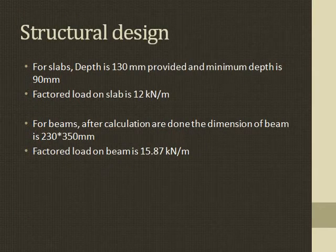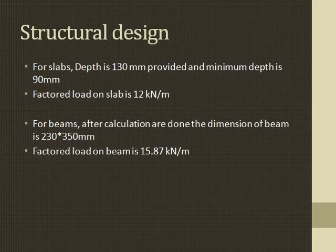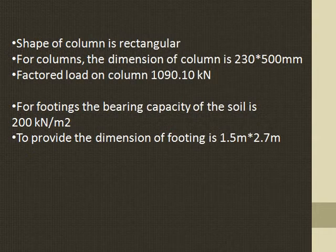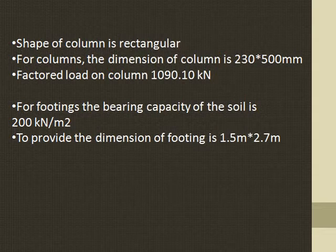Structural design — for slabs, the depth provided is 130 mm with a minimum depth of 90 mm, and factored load on the slab is 12 kN/m. For beams, the dimension is 230 × 350 mm (breadth × depth), and factored load on the beam is 15.87 kN/m. For columns, the shape is rectangular with dimensions 230 × 500 mm and factored load of 1090.1 kN. For footings, the bearing capacity of soil is 200 kN/m², and a rectangular footing of size 1.5 m × 2.7 m has been provided.